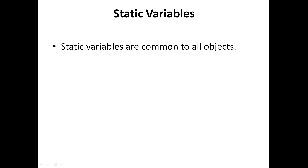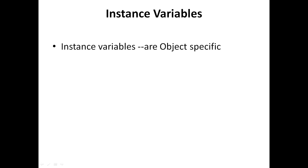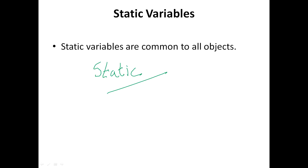What is a static variable? Static variables are also called class variables and are declared using the special keyword 'static'. Unlike instance variables which are object-specific, static variables are not object-specific. Static variables are initialized before execution, and a separate block of memory is assigned to them which is accessed by all objects.